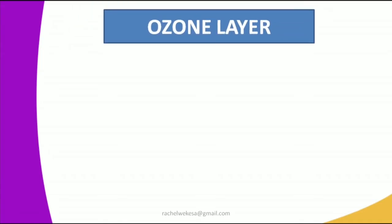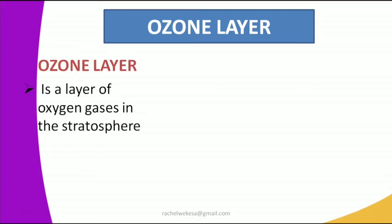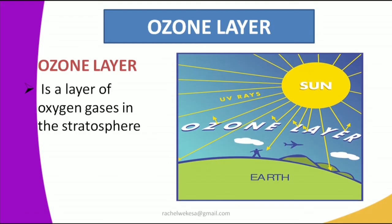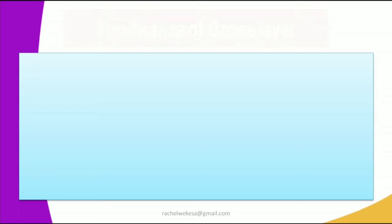Let's move on to the ozone layer — the layer between the Earth's surface and the higher atmosphere, the skies. The ozone layer is a layer of oxygen gases in the stratosphere; soon we will look at the structure of the atmosphere and what the stratosphere is. The ozone layer sits in the middle between the Earth's surface and the sun, absorbing radiation to prevent UV light from reaching us.